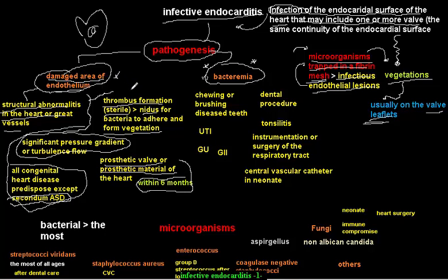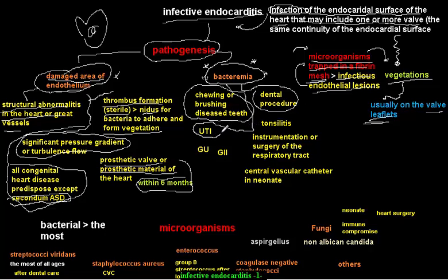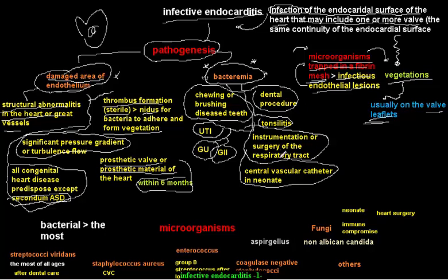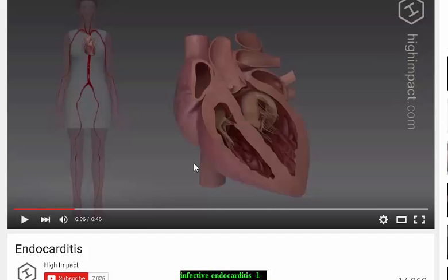Regarding bacteremia: any bacteria in the body may lead to endocarditis, but the most important source is dental procedures. Chewing or brushing teeth may also lead to endocarditis. Other sources include UTI, genital tract infections, gastrointestinal tract infections, tonsillectomy, instrumentation or surgery of the respiratory tract, central vascular catheters, and open heart surgery. Dental procedures are very important to remember.